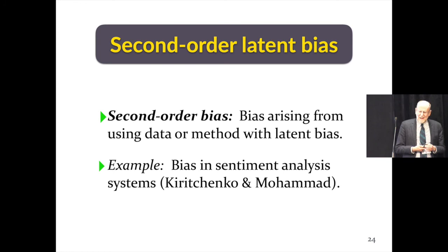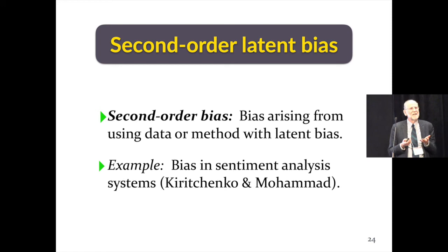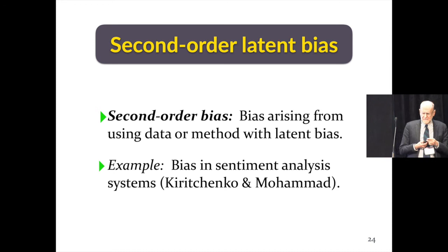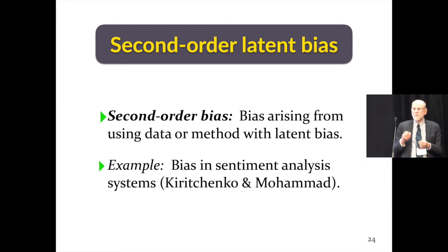This leads us to second-order bias when we start to use these word embeddings. When we have biased data or a method with latent bias and we start to use that method, our system is going to be biased and we don't even necessarily know that it's biased or what the source of the bias is — it might be the word embeddings, it might be something else. An example of that is the kind of bias found in sentiment analysis systems, in work by Kirichenko and Mohamed, and Saif will be talking about that in his next talk.